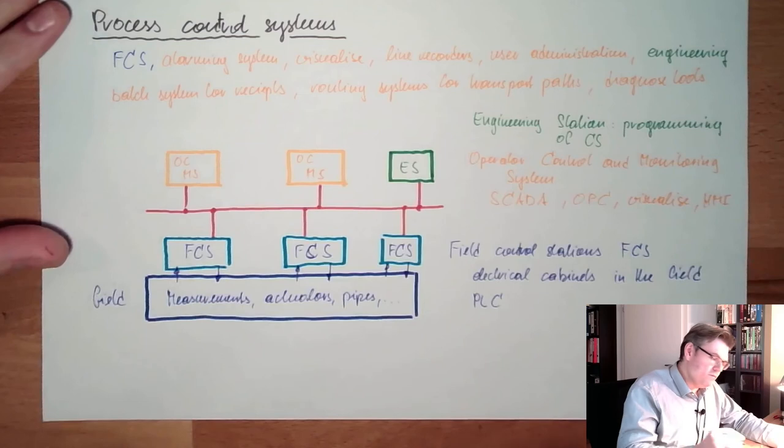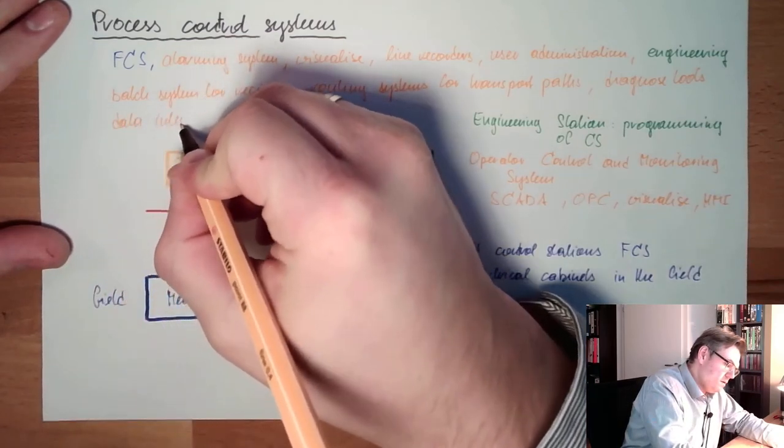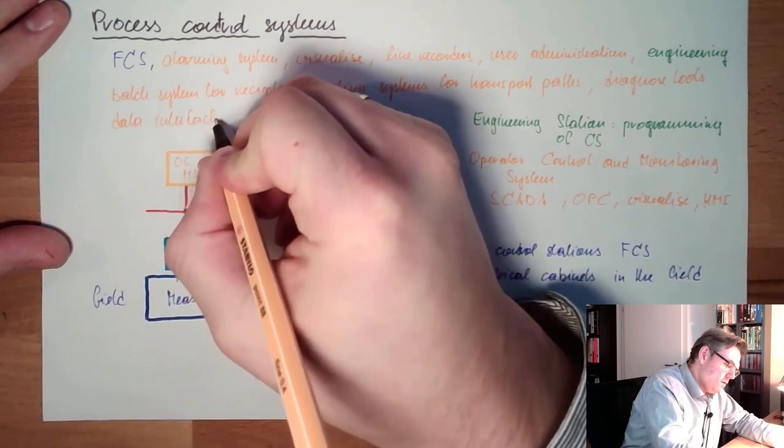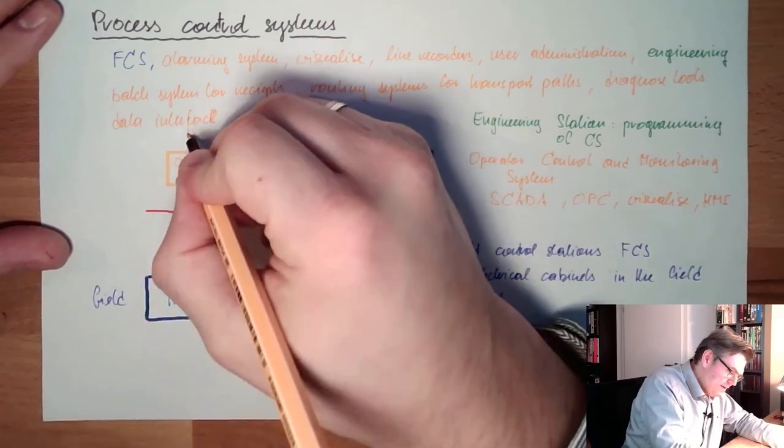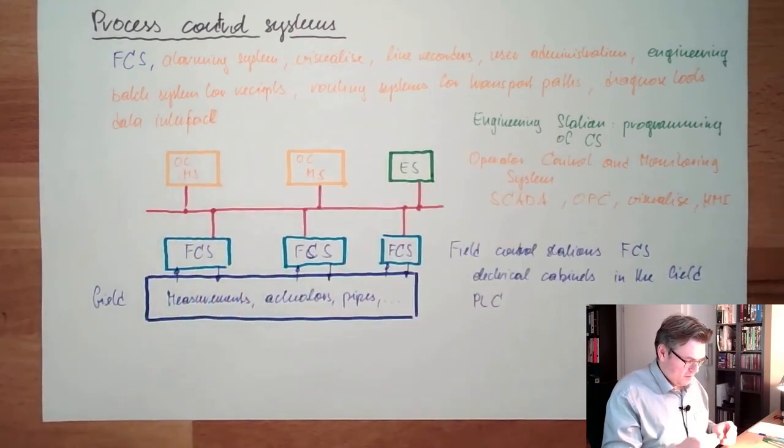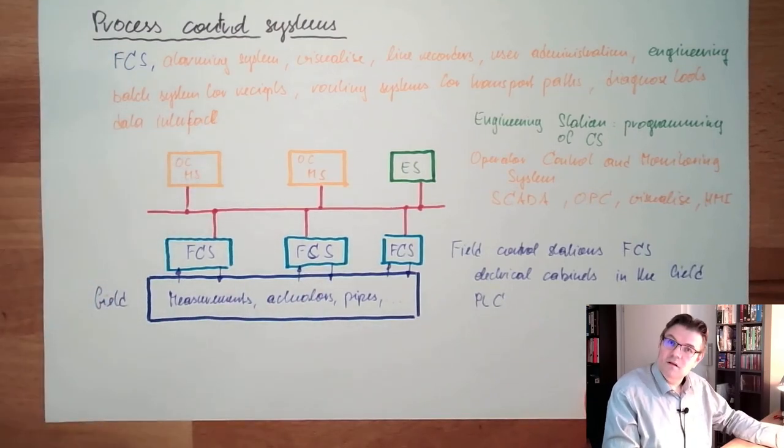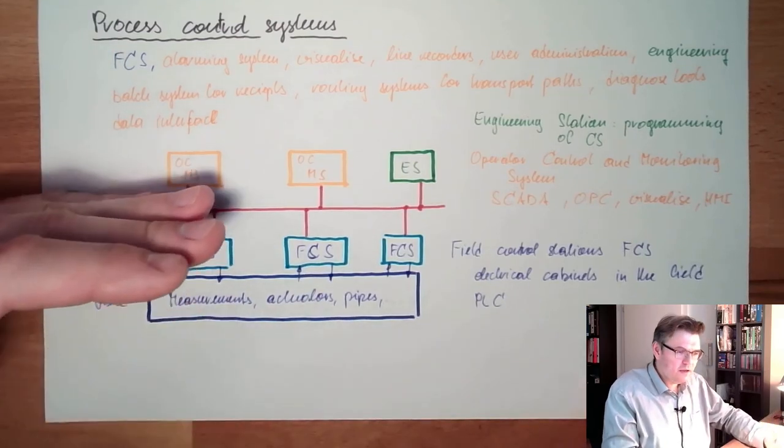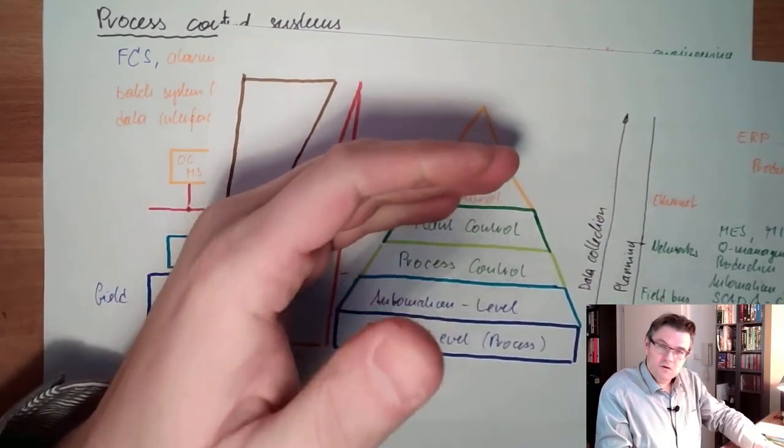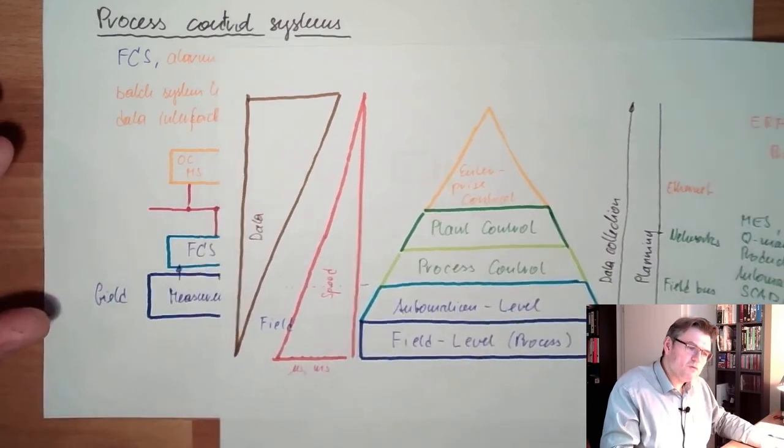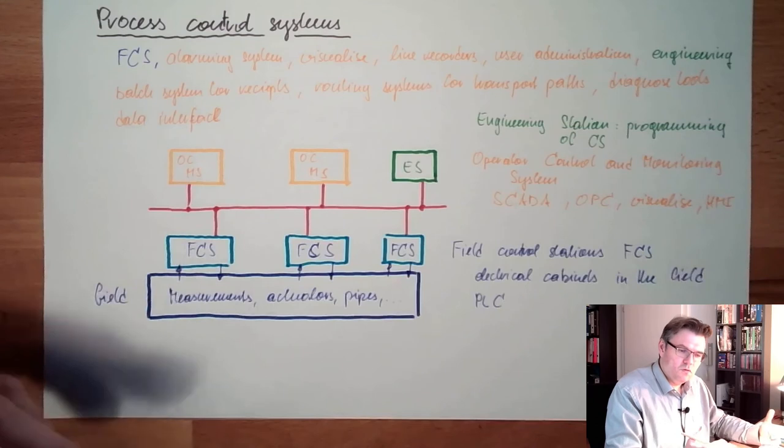What is used very often is a data interface. Somewhere a data interface which can go to a higher level. It's not ended here - maybe we have an enterprise control, maybe also some layers in between. Then we need some data interface to communicate.